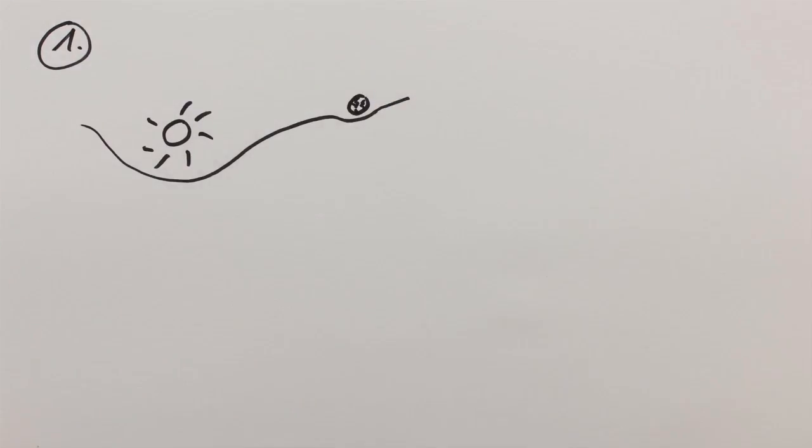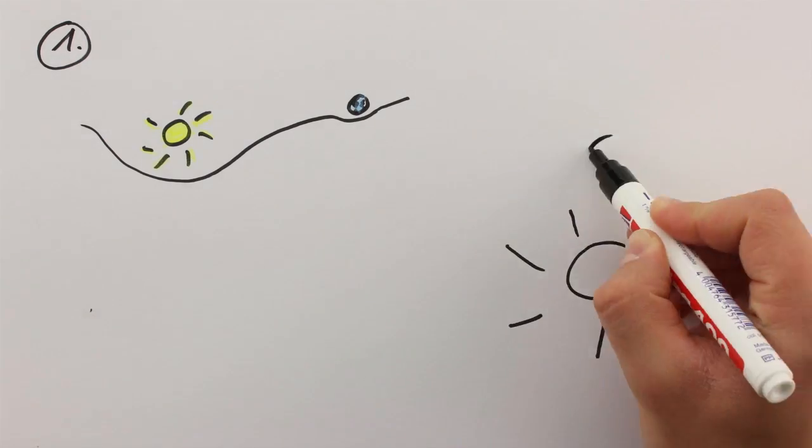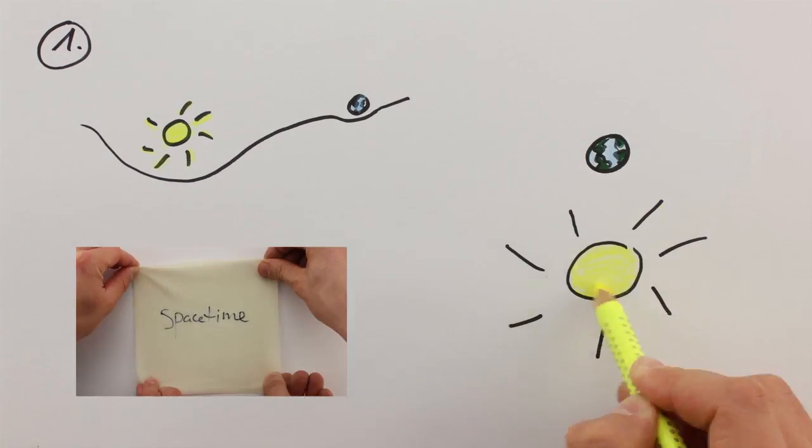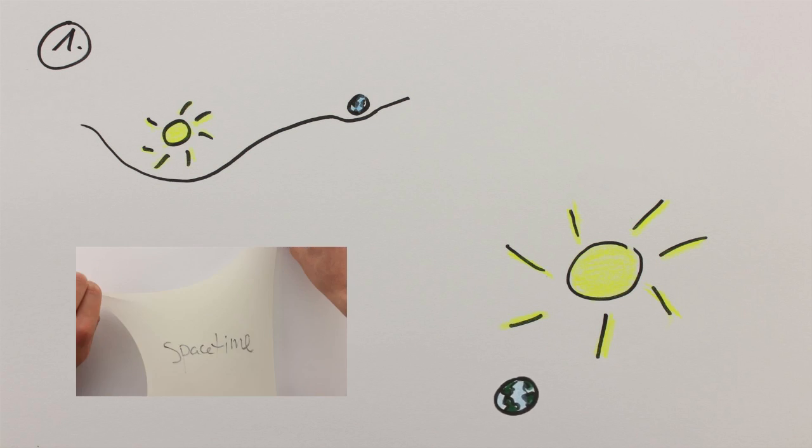We already know that one, gravity is the result of deformed space-time. Matter tells space-time how to deform, and the deformed space-time tells matter how to move.